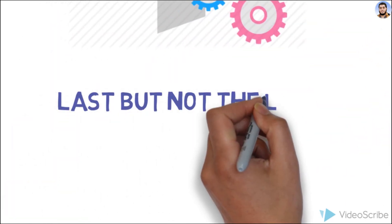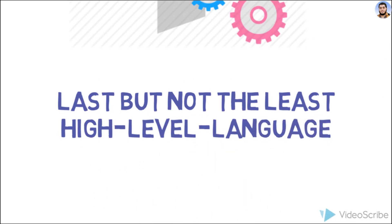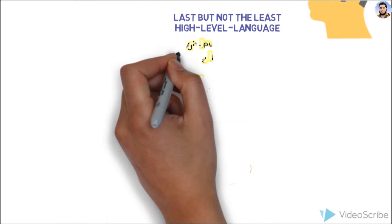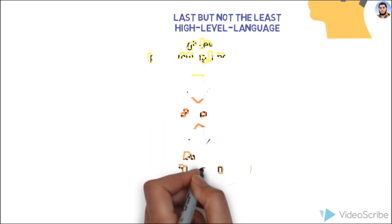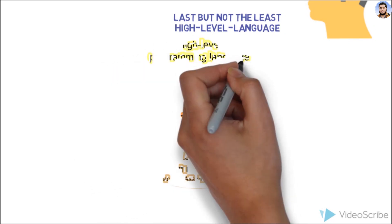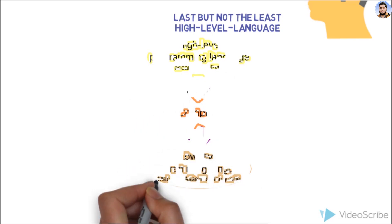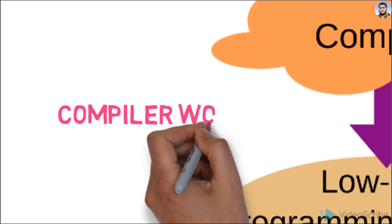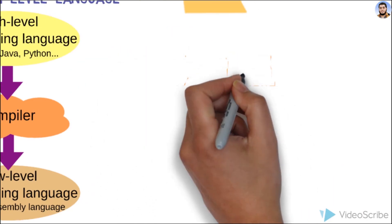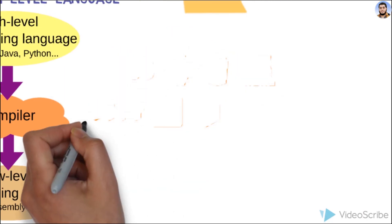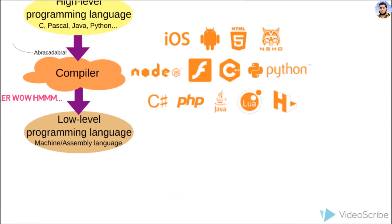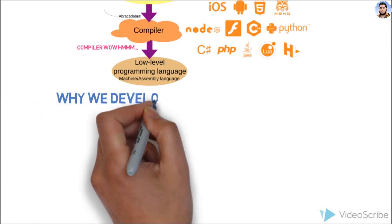High-level language وہ language ہے جو human کو understandable ہو — یعنی human اسے سمجھ سکے۔ اس کے لیے ہم compiler نامی translator استعمال کرتے ہیں۔ Compiler وہ instruction sets یا statements جو ہم high-level language میں لکھتے ہیں، انہیں machine-level language میں convert کر دیتا ہے۔ High-level language اسی ضرورت سے develop ہوئی۔